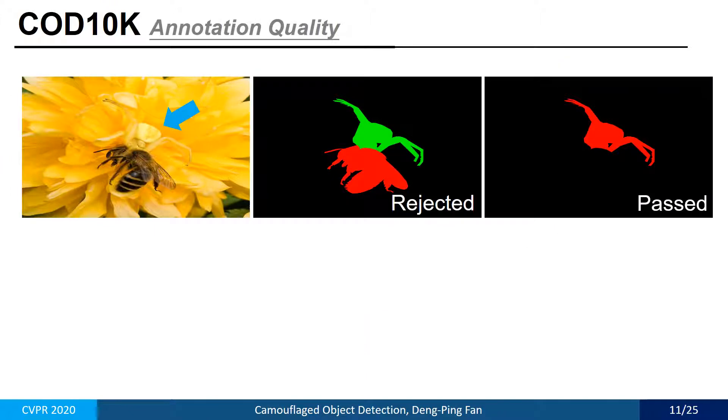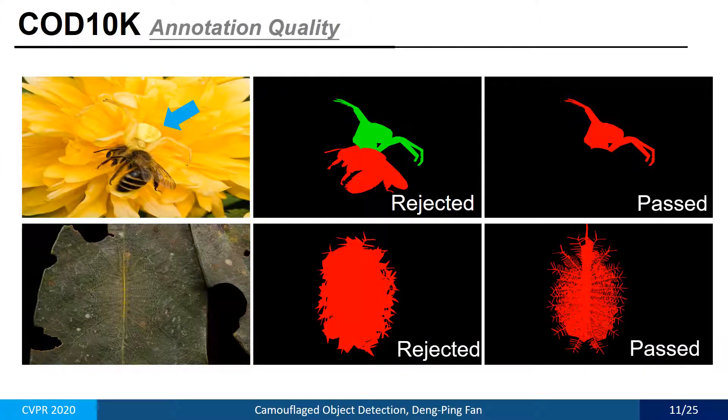To ensure high-quality annotation, we invited three viewers to participate in the labeling process for 10-fold cross-validation.